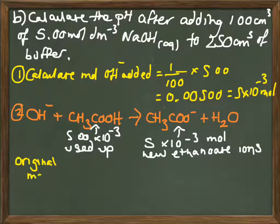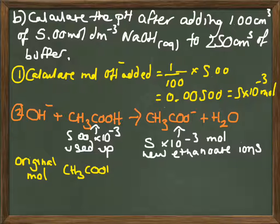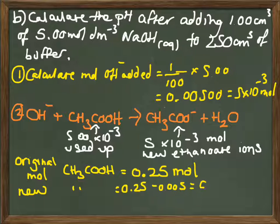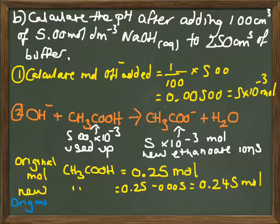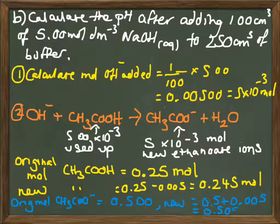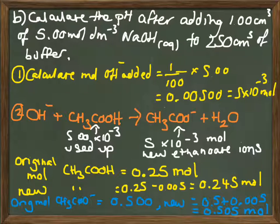We're going to use up—the hydroxide is going to react with your weak acid as shown in the equation there, forming new ethanoate ions and water. We're going to use up 5 times 10 to the minus 3 moles of ethanoic acid and then form a new batch of ethanoate ions on the right-hand side.